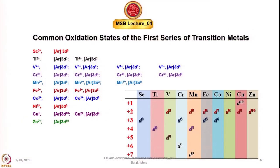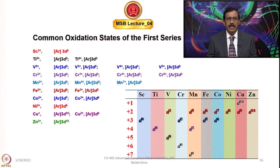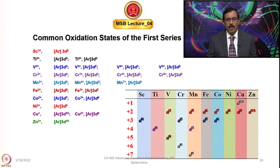Let us look at the common oxidation states of the first series of transition elements. The scandium group has a common oxidation state of +3. Titanium (d2s2) has a group oxidation state of +4, and also +3 and +2 which are a little unstable. Vanadium shows +2, +3, and +5. Manganese shows all possible oxidation states up to +7. Iron shows +2 and +3 as the most common. Cobalt also shows +2 and +3. Nickel shows +2 and in some cases +4. Copper shows +1 and +2 states, and zinc shows +2.